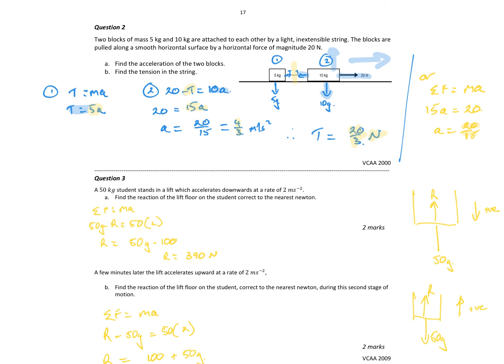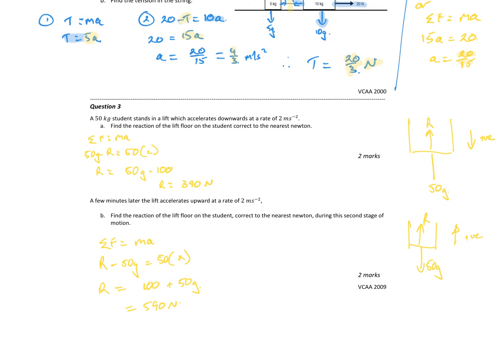A 50 kilo student stands in a lift which accelerates downwards. There's my 50 kilo student going downwards at a rate of 2 meters per second squared. Find the reaction of the lift floor on the student. So we've got the resultant force. Sum of the forces equals ma. I've got positive as downwards, so I've got 50g minus R equals ma. 50g minus R equals ma. We get the resultant force is 390 newtons.